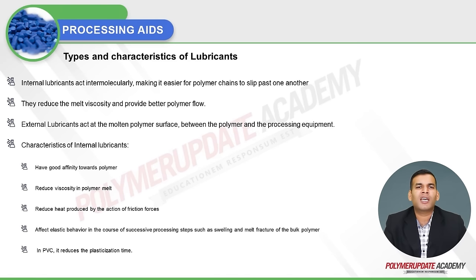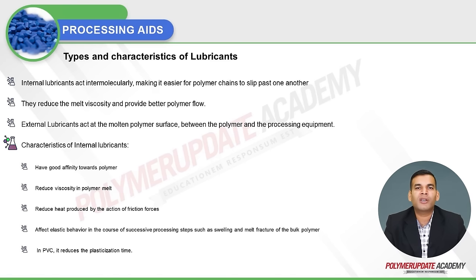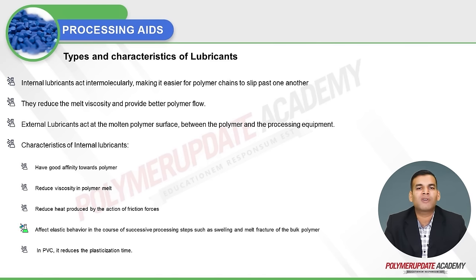Internal lubricants act intermolecularly, making it easier for polymer chains to slip past one another, reducing melt viscosity and providing better polymer flow. External lubricants act at the molten polymer surface between the polymer and the processing equipment. Characteristics of internal lubricants include good affinity towards the polymer, reduction of viscosity of the polymer melt, reduction of heat generated by frictional forces, and effects on elastic behavior during successive processing steps such as swelling and melt fracture.